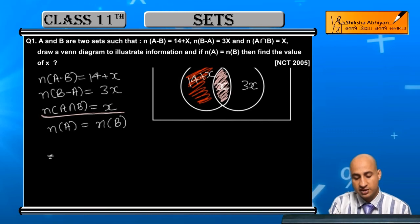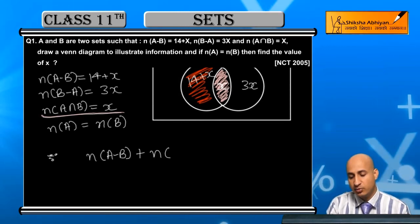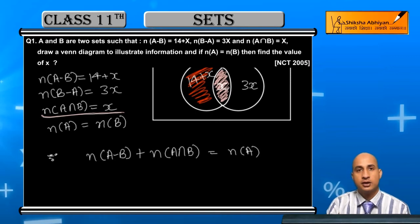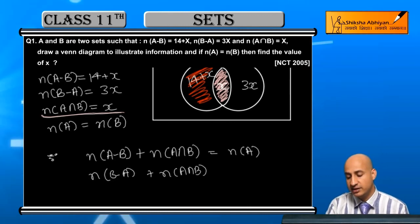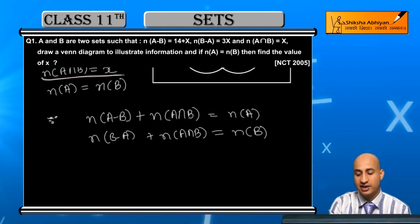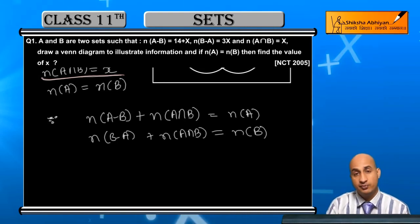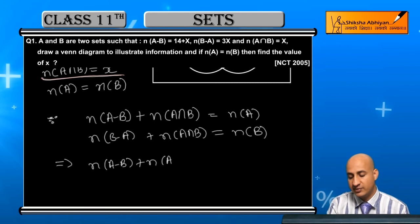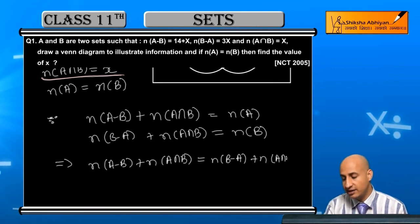Now I know that n(A-B) + n(A∩B) will represent n(A). And if I do n(B-A) + n(A∩B), that will equal n(B). These are the formulas from properties of sets. Now, given that n(A) and n(B) are equal, this implies that n(A-B) + n(A∩B) = n(B-A) + n(A∩B).